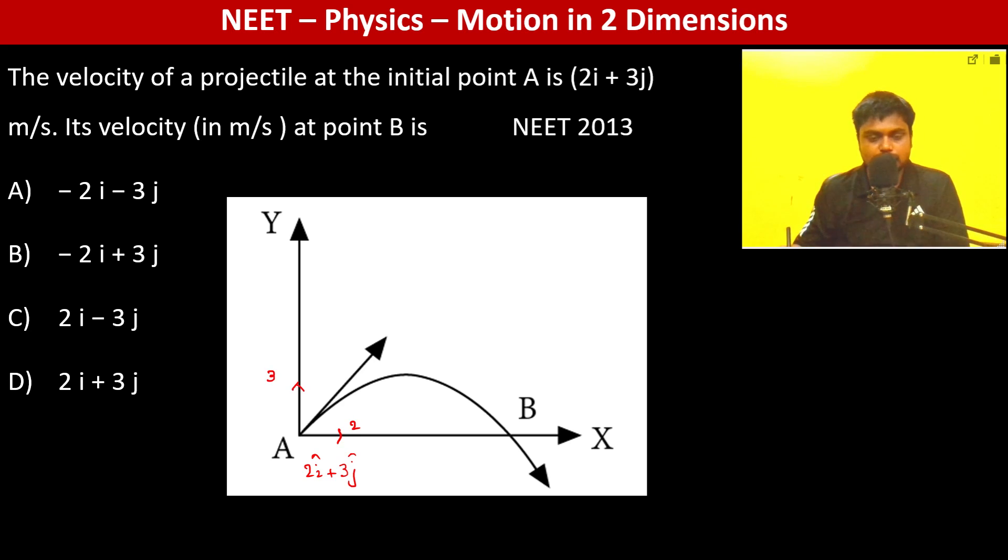So at B, what's the velocity? At B, the velocity in x direction is going to be 2 only, because in x direction the velocity doesn't change. Now in y direction,